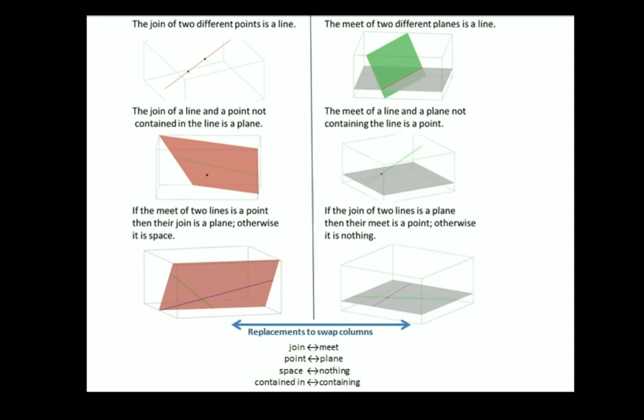So, this is actually not just a kind of word game. It's actually a very deep idea because what it's saying is that if you have a configuration which can be described by these different phrases or a theorem involving these different phrases using these words like join and meet, point, plane, space, nothing, contained, and containing. Well, if you then get that phrase and perform these replacements upon it, then you get another phrase which describes another configuration or theorem or whatever, which is logically absolutely equivalent.